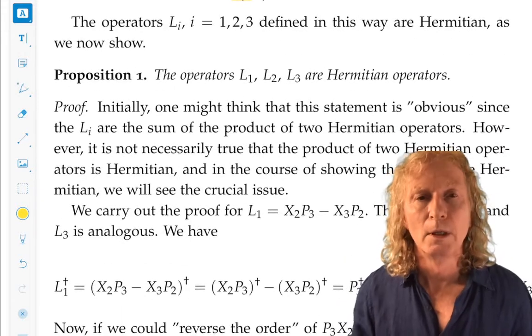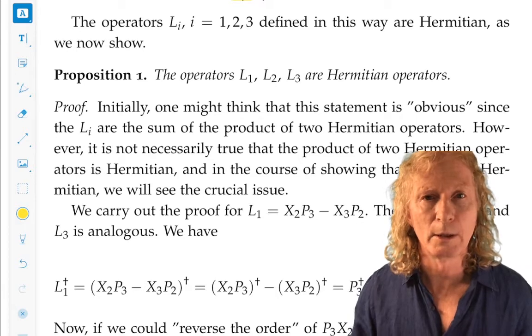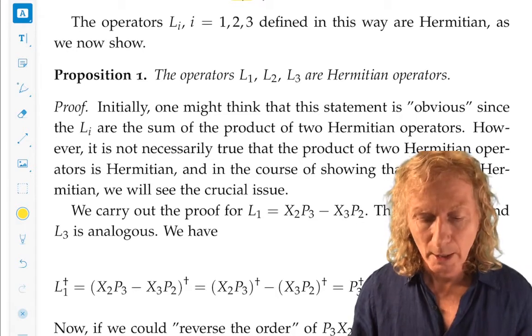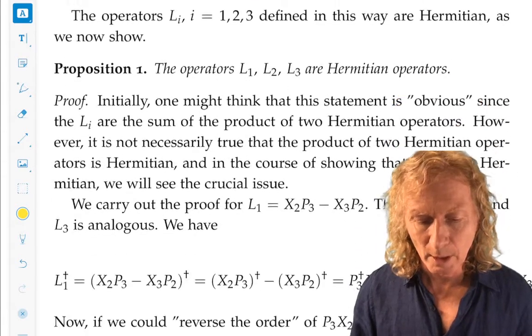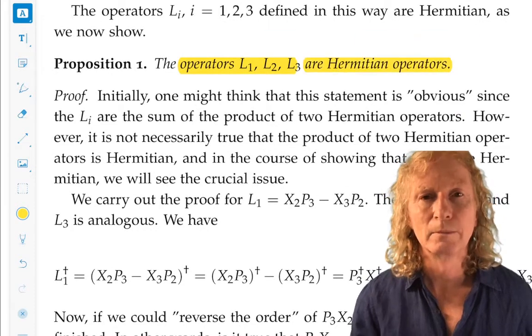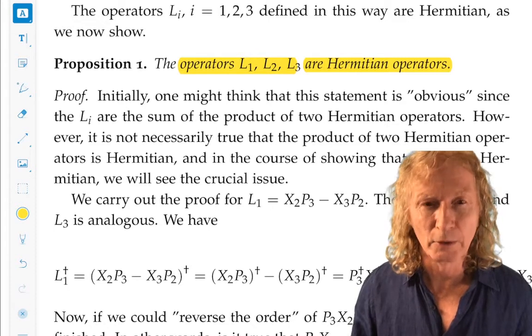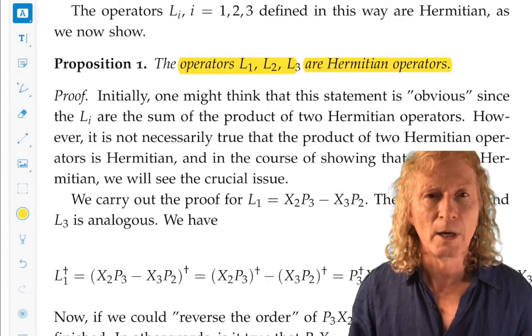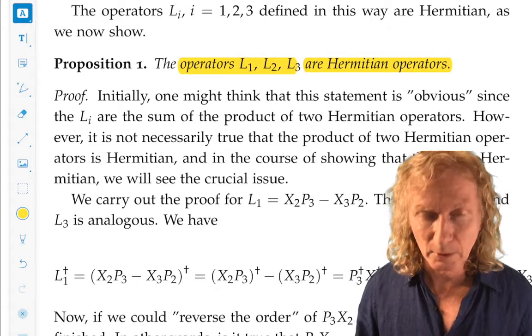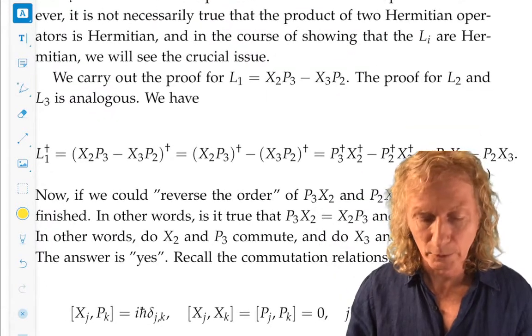So the first thing we need to do, since we want quantum angular momentum to be an observable, is to show that the three operators are self-adjoint, or Hermitian. Now you would think that would be almost obvious, since the x_i's and p_i's are Hermitian, but there's a little wrinkle to it. So let's prove this for L1.